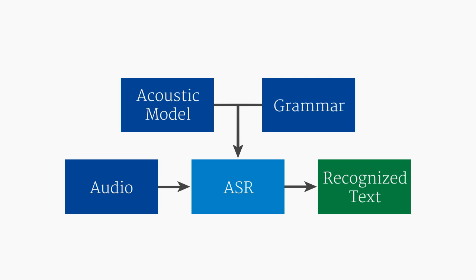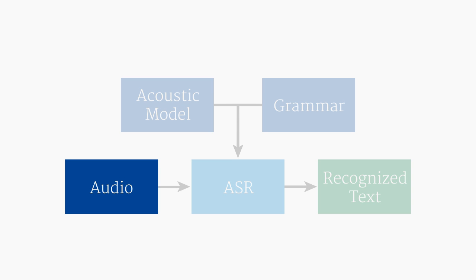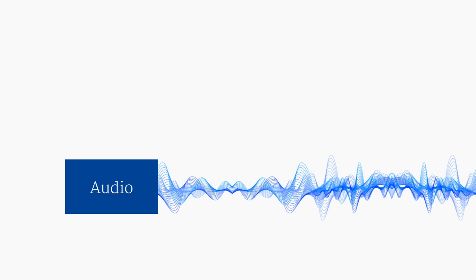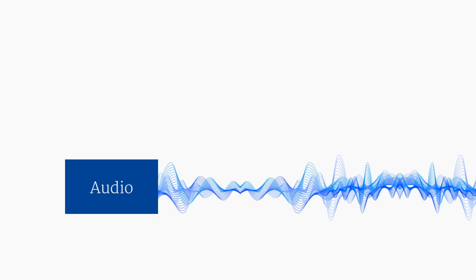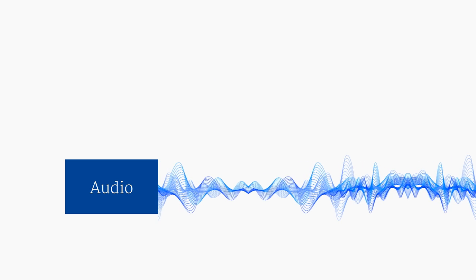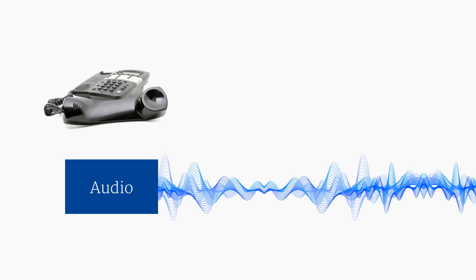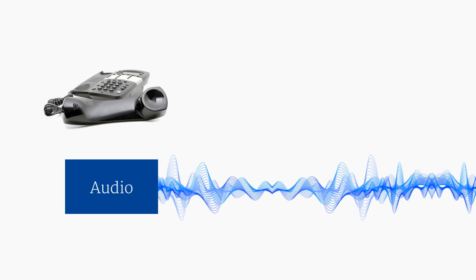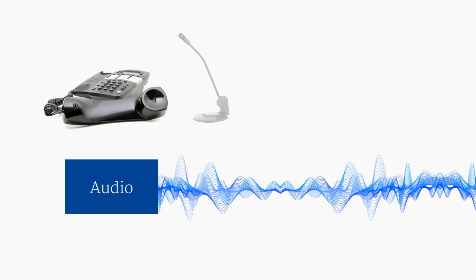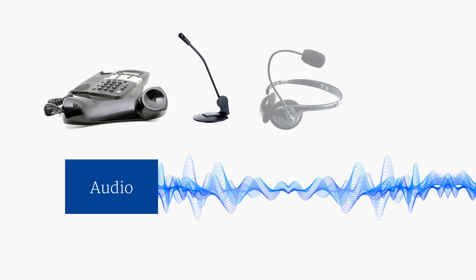The first input should be relatively self-explanatory: it's audio containing words spoken by a user. In an IVR, this will likely be somebody speaking over a telephone, but it might also be a user talking into a microphone or other device.